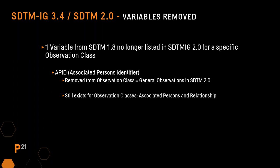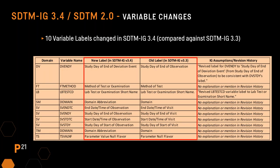Another variable, APID, had its usage changed from previously being listed as general observation class to now being limited to the associated persons and relationship domains. With each new release of the standards, changes are made to existing information. Most of the time there are reasons for these additions, deletions, or changes. However, sometimes the changes do not seem to have a necessary reason. This is problematic because when standards are repeatedly changed for reasons that aren't critical, by mistake, or just for minor tweaking, the result is always-changing standards, which means there are no real actual standards.